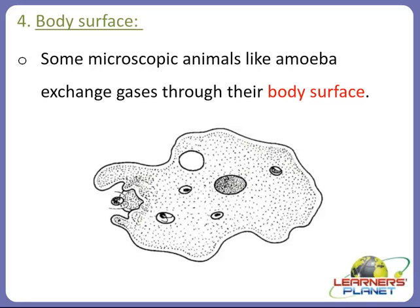Now we have discussed animals and their breathing organs. But why is breathing important for animals? Animals get oxygen while breathing, which burns the food within their bodies, and they get energy to do work. That is why breathing is very important for animals, and different organs are present in different kinds of animals. Now let's move on to the movement of animals.